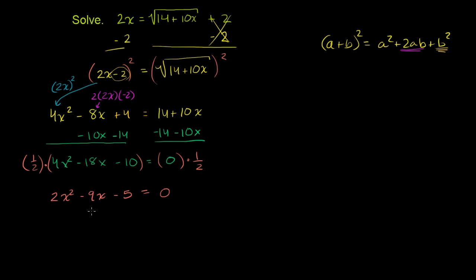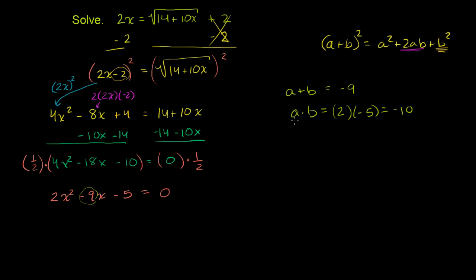For factoring by grouping, we look for two numbers a and b that add up to negative 9 and whose product equals 2 times negative 5, which is negative 10. Since the product is negative, one number must be positive and one negative. We've covered why this works in previous videos.